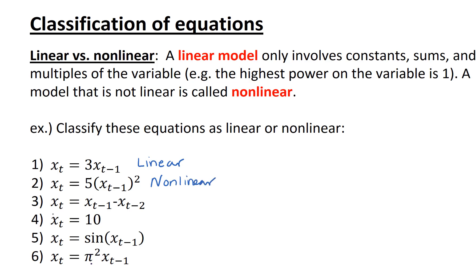Next, we've got x sub t equals x sub t minus 1 minus x sub t minus 2. Again, the highest power exponent is 1, so this is a linear model.